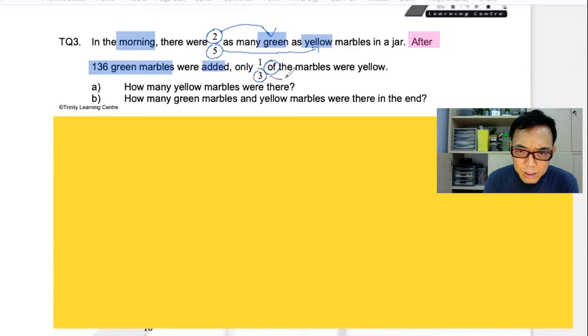three represents the total number of marbles. Now, since green marbles were added, the total number of marbles would also increase. This means that the total is no longer the same.